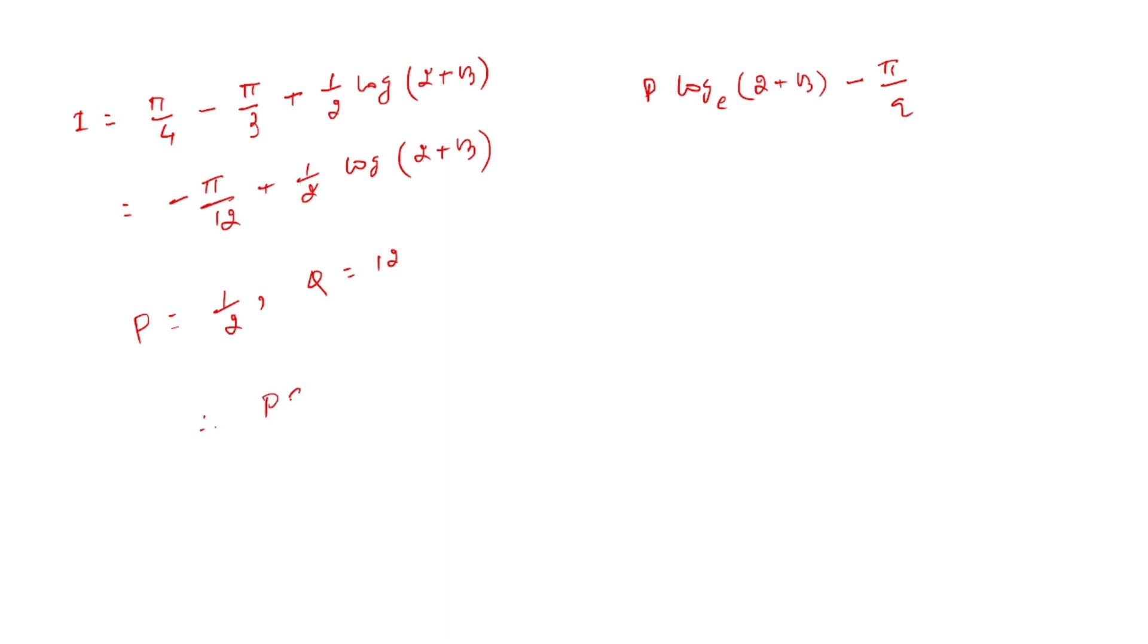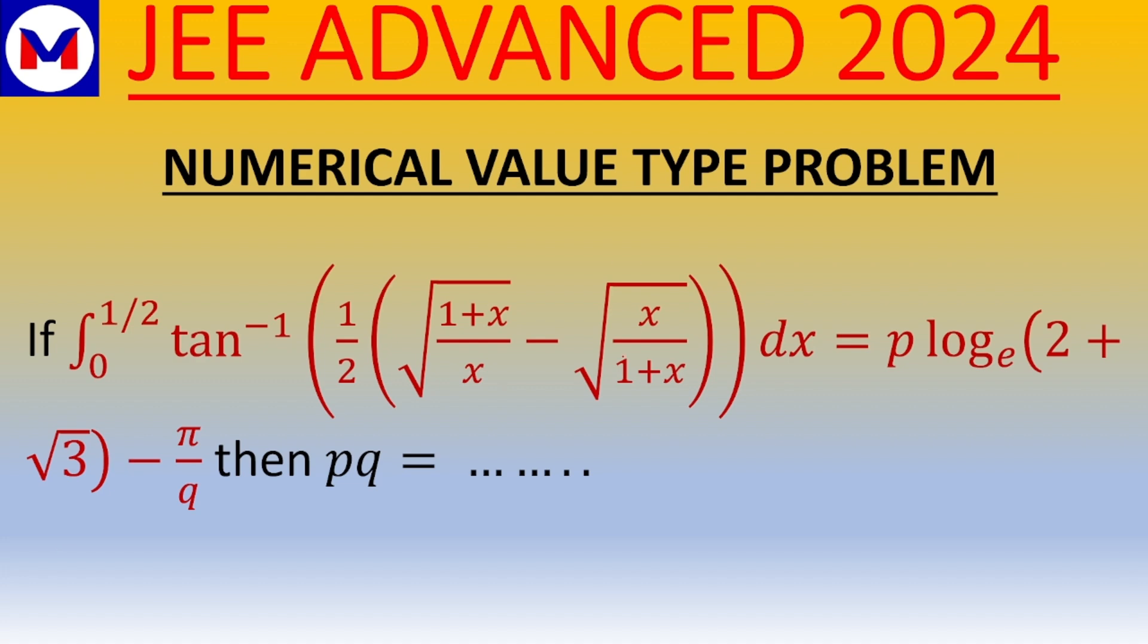Therefore, the value of pq = 1/2 × 12 = 6. This is our integer type solution and numerical value. This is the required result of the given question.